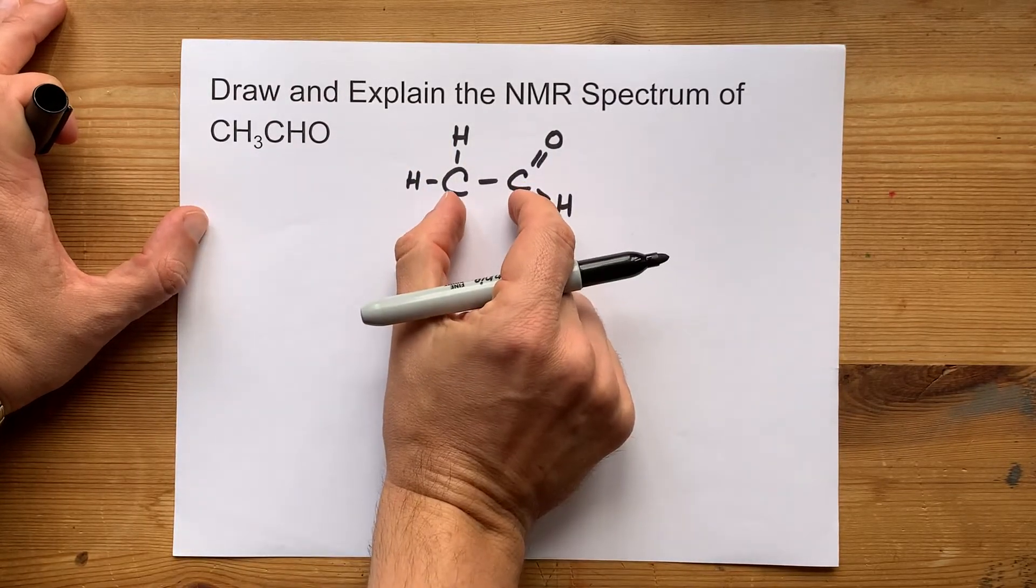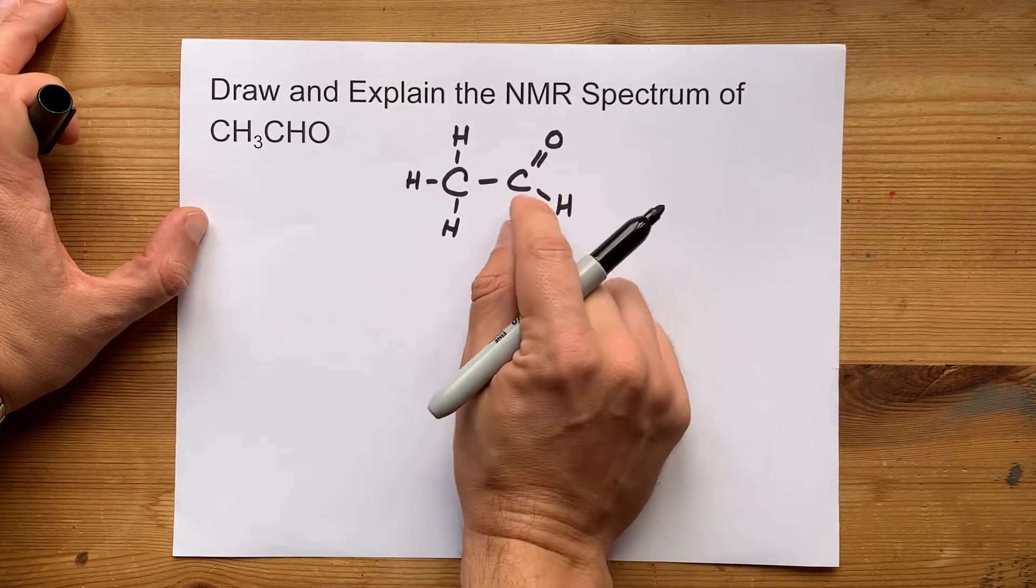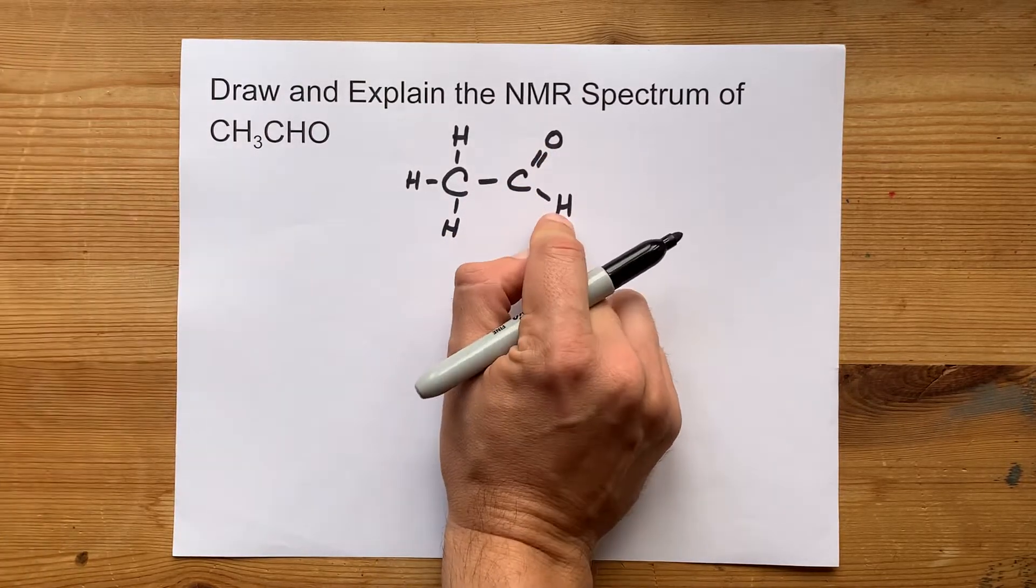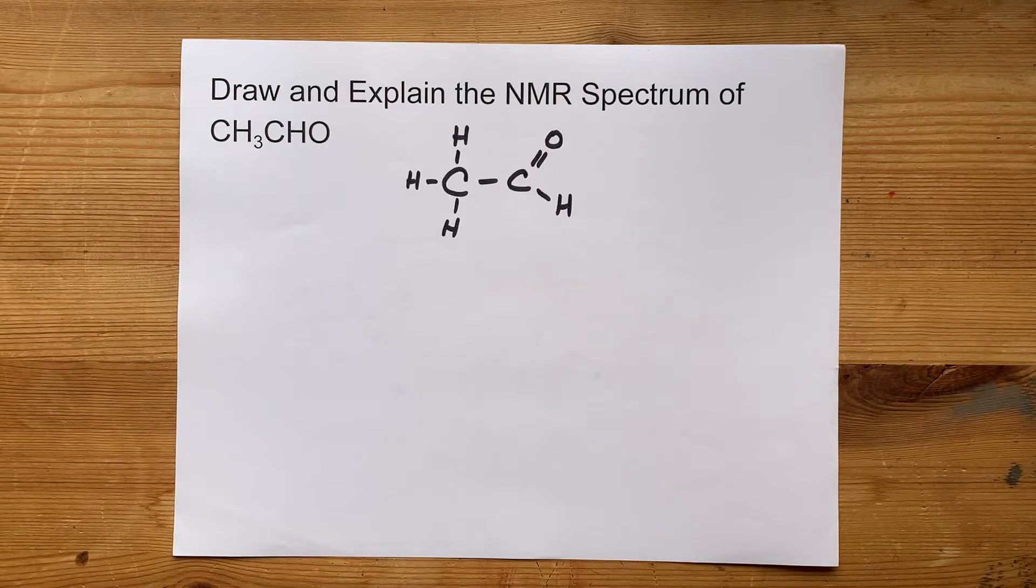Acetaldehyde means there's a two-carbon chain. Well, the aldehyde part means that there's a double-bonded O and a single H at the end of the molecule.